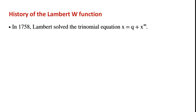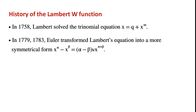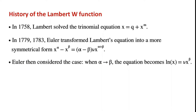History of the Lambert W function: in 1758, Lambert solved the trinomial equation x equals q plus x to the power of m. In 1779 and 1783, Euler transformed Lambert's equation into a more symmetrical form: x to the power of alpha minus x to the power of beta equals alpha minus beta times mu times x to the power of alpha plus beta. Euler then considered the case when alpha tends towards beta.